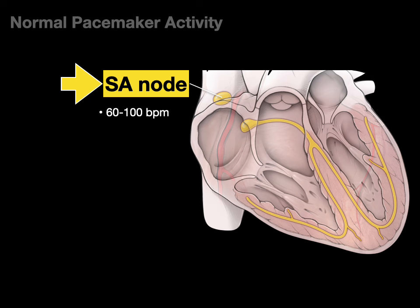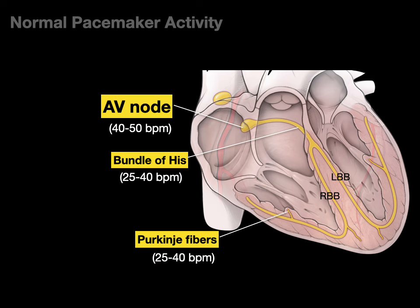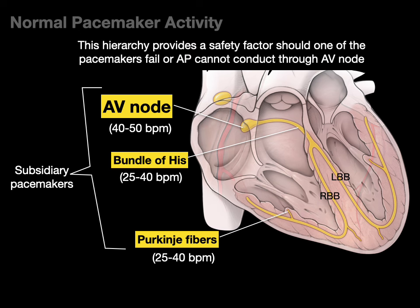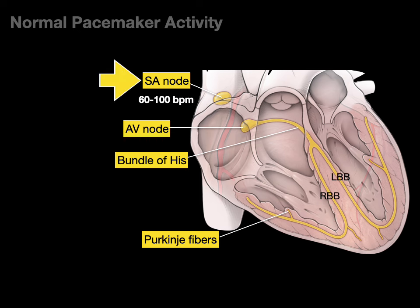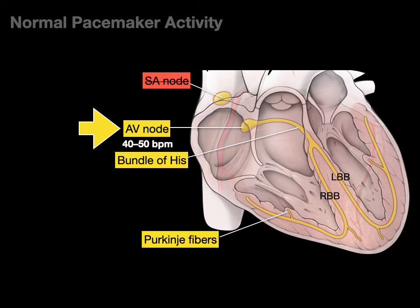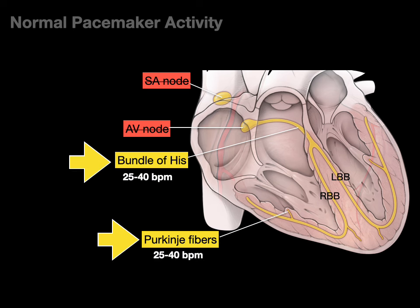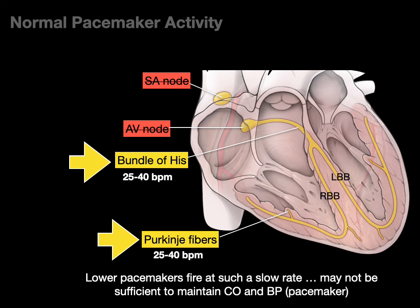The SA node fires at 60 to 100 beats per minute. The AV node, bundle of His, and Purkinje fibers also have automaticity, but they're slower — they're subsidiary pacemakers. This hierarchy provides a safety factor should one of the pacemakers fail or the action potential cannot conduct through the AV node. If the SA node stops, the AV node picks up at 40 to 50 beats per minute. If the AV node stops, the bundle of His and Purkinje fibers take over, but at such a slow rate they may not maintain cardiac output or blood pressure, and the patient would need an electrical pacemaker inserted.